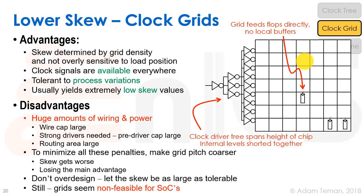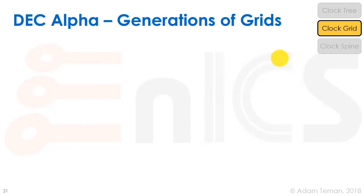The clock grid is very tolerant to process variation and typically yields extremely low skew values. However, it costs a lot in wiring and power — it takes up at least one full routing layer, which can be very expensive and infeasible. The capacitance is huge, requiring very strong drivers, and it consumes large routing area. To minimize these penalties you could make the grid less dense, but then skew gets worse and you lose the main advantage. Over-designing for tolerable skew is not feasible for real SoCs.